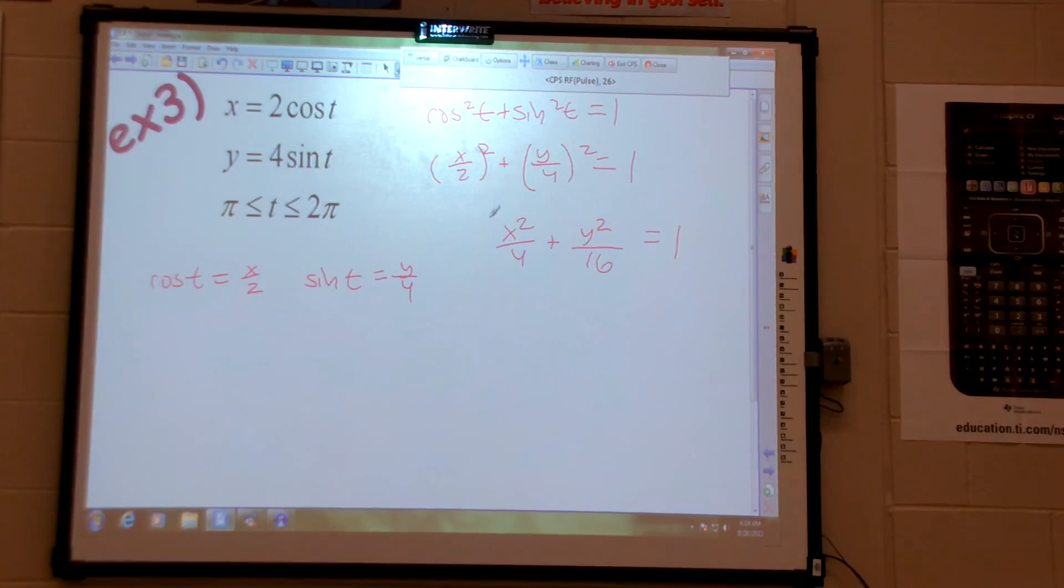But now what do I have to multiply by to get rid of my fraction? 16. You're multiplying by the LCM, right? The 4 and 16. Or, I'm sorry, the least common denominator. Our greatest common factor if you're looking at the calculator, but we'll get to that in a second. So I get 4x squared plus y squared equals 16.